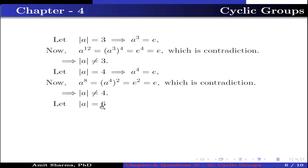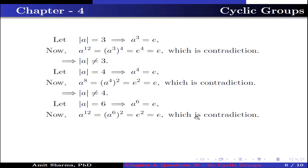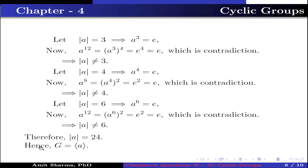Let order of A be 6, this implies A to the power 6 equals identity. Then A to the power 12 equals (A to the power 6) squared equals e squared equals identity, which is a contradiction since A to the power 12 is not equal to identity. So order of A is not 6. Therefore order of A equals 24, and hence G is generated by A.